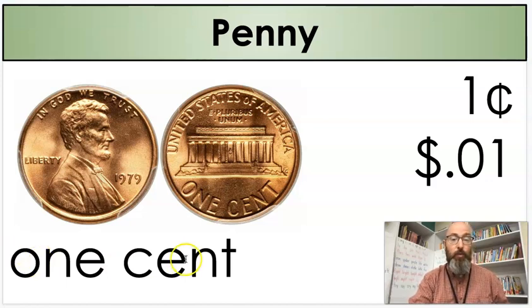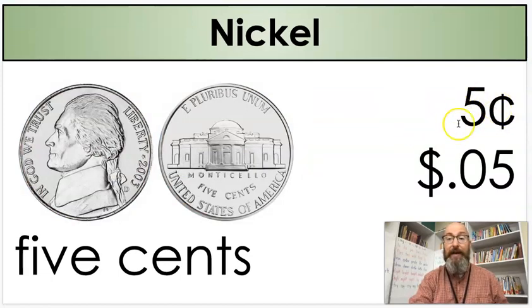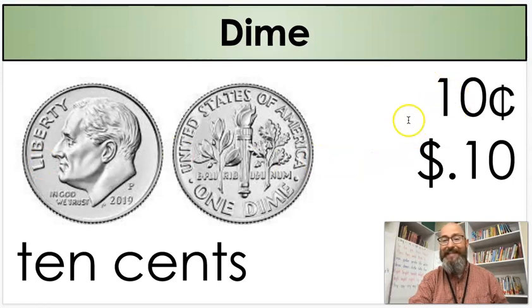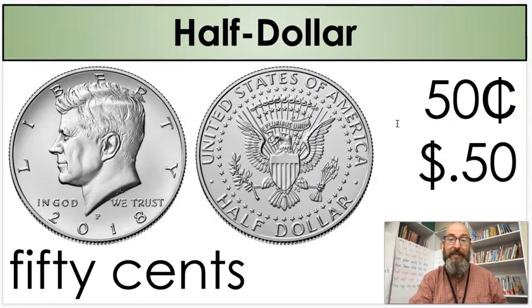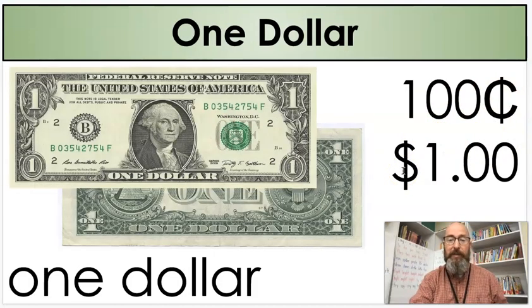First, we have a penny. A penny is worth one cent and we can write it this way. We have a nickel. A nickel is worth five cents. A dime is worth 10 cents. A quarter is worth 25 cents. We can write it this way - I'm showing you how to write it here on the side. We have the rarely seen 50 cent piece, the half dollar, because it's worth half a dollar - 50 cents. And then we have a one dollar bill worth a hundred cents or one dollar. It has a one in all the corners, which tells us it's a one dollar bill worth one dollar.